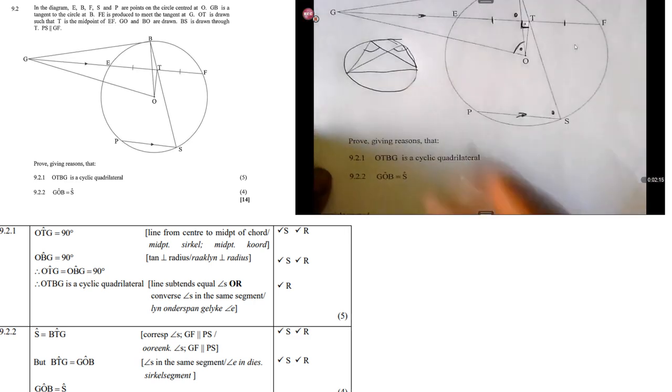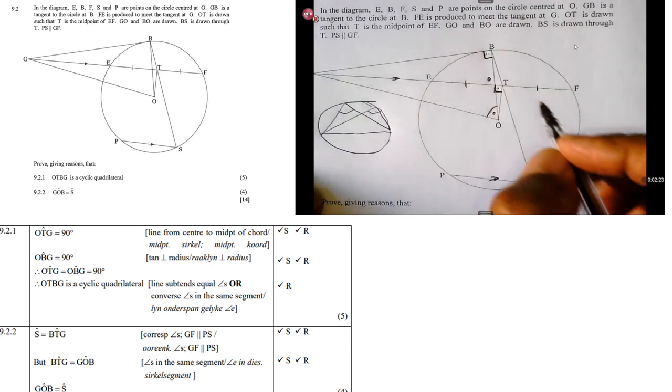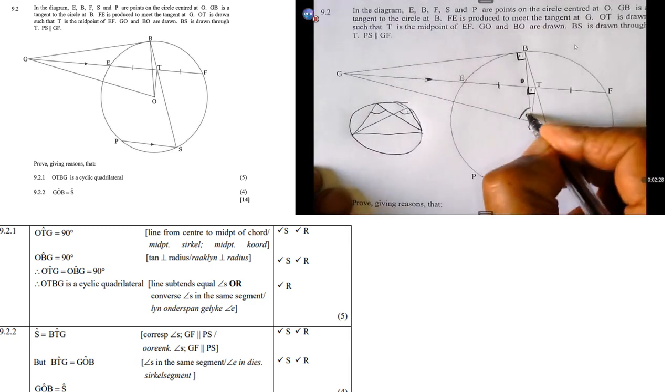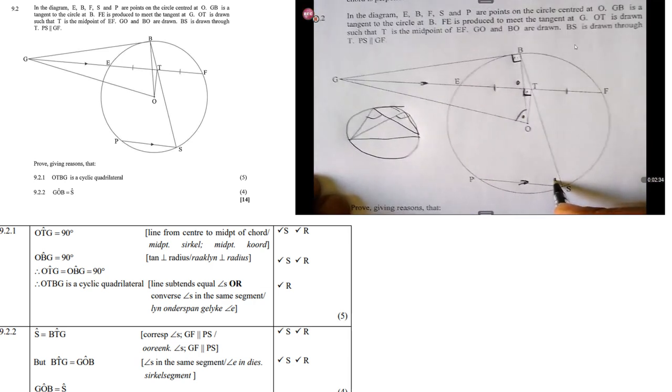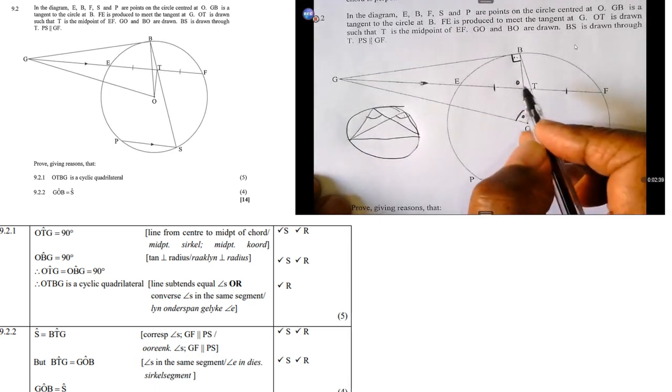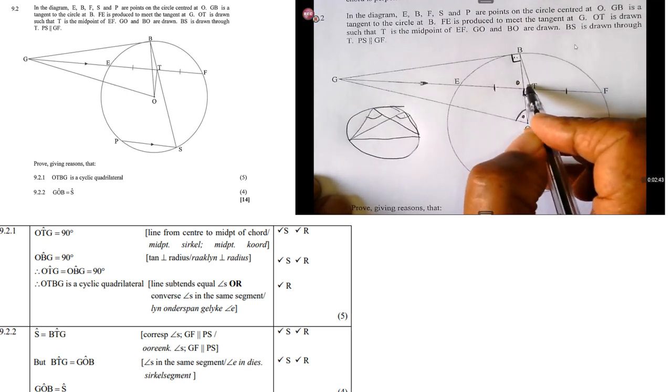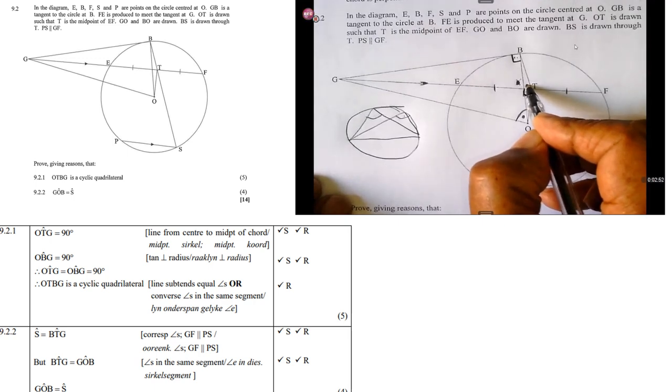Then, second question. Prove that GOB equals S. GOB, this angle here. Prove that it is equal to angle S. Now, angle S is equal to BTG. Angle S is equal to BTG, this one here. Now, why are they equal?